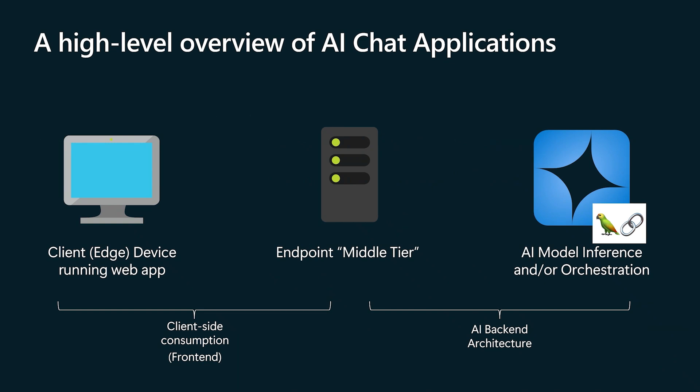I'd like to start by giving a high-level overview of what AI chat applications look like today. This is a very simplified diagram that focuses on the key pieces of an AI chat application, and it's designed to abstract away any implementation-level details. We have three key pieces: from left to right, the client or edge device running a web application, a middle-tier endpoint that the application on the client side will consume, and your AI infrastructure, which could be an SDK to generate a response or something with orchestration or extra steps — in this example, an Azure OpenAI service running a model orchestrated with Langchain.